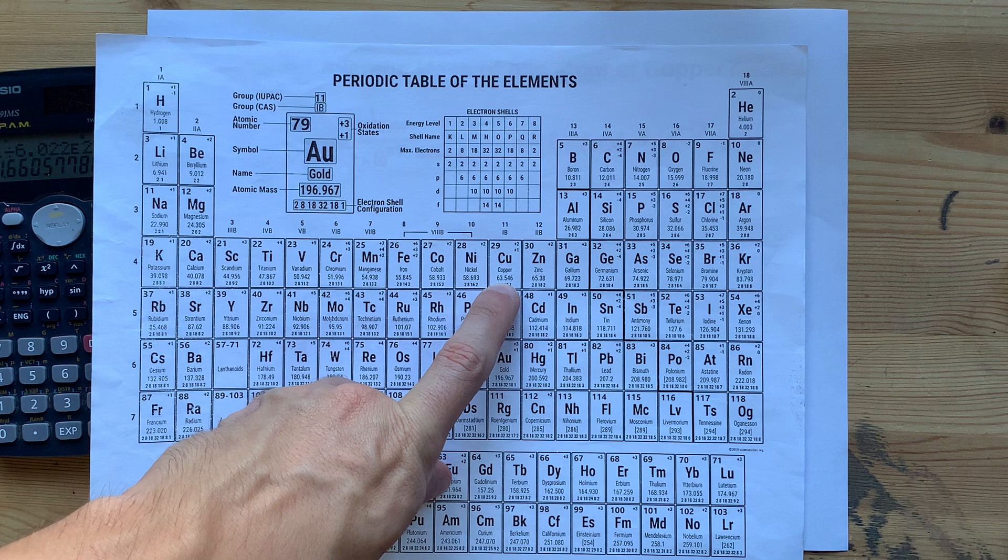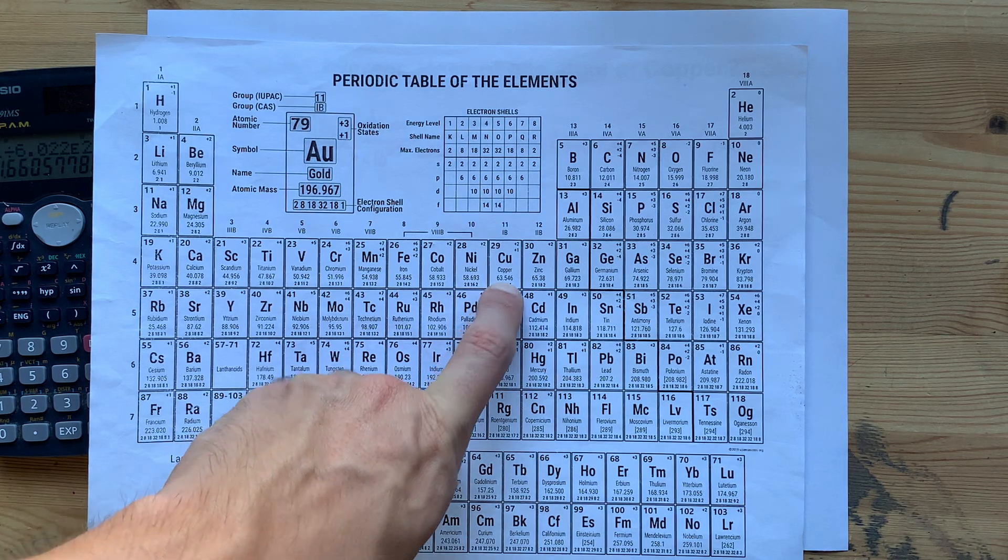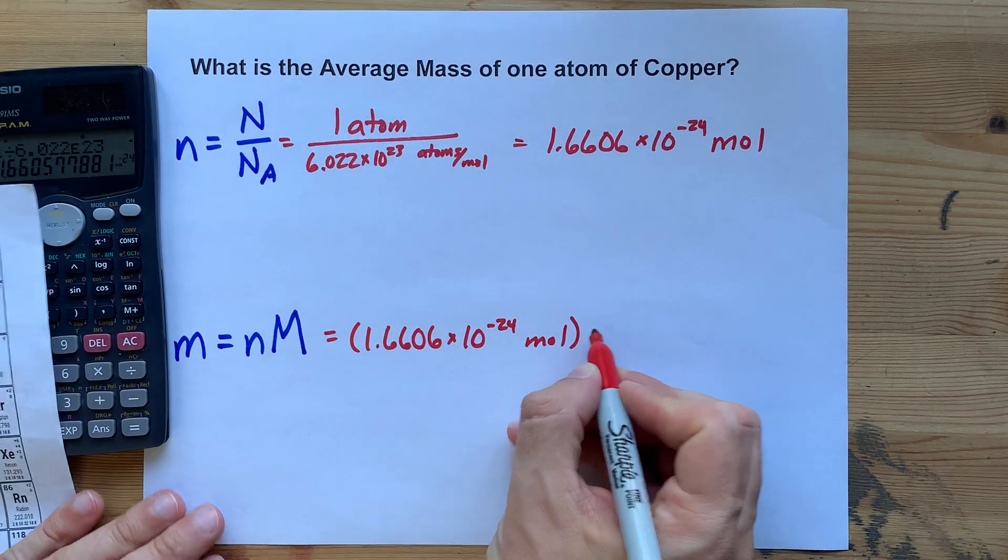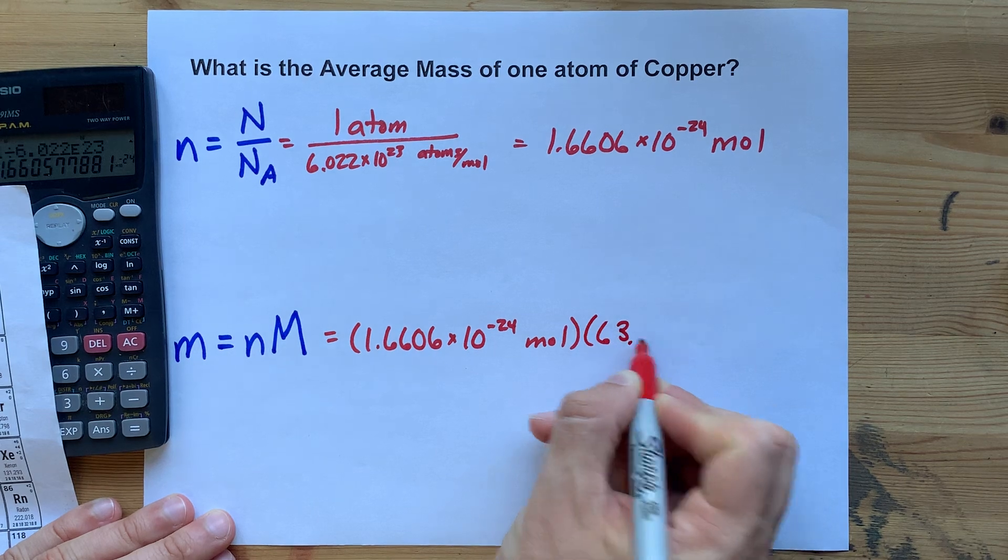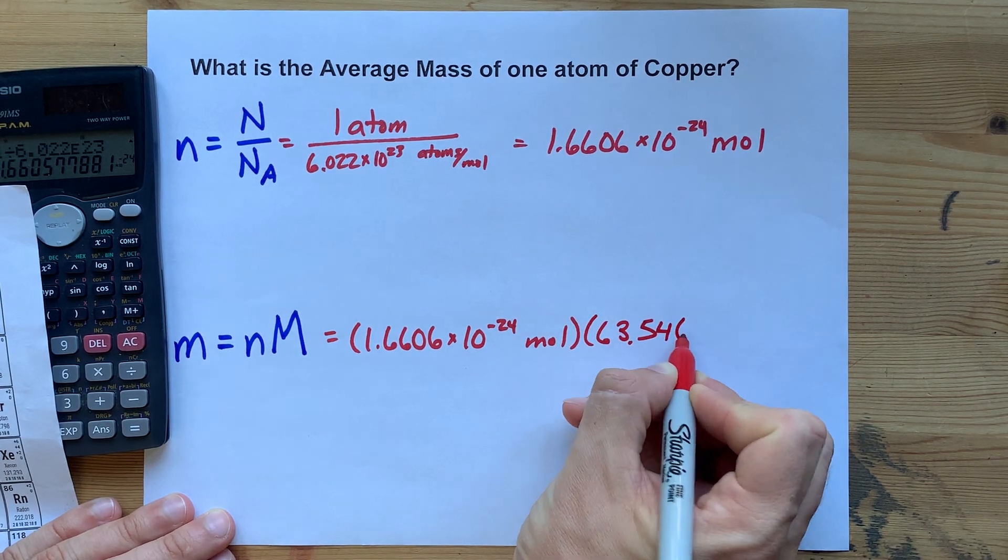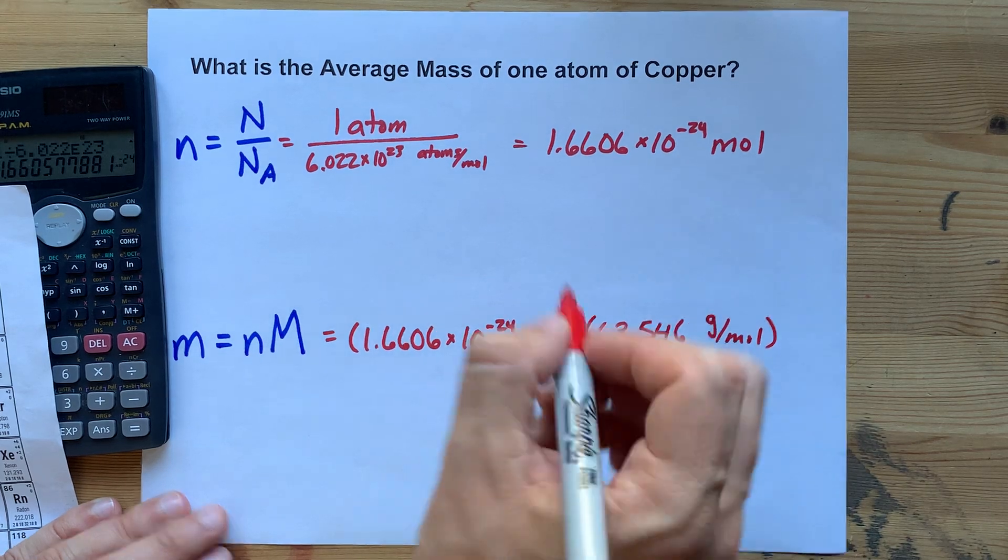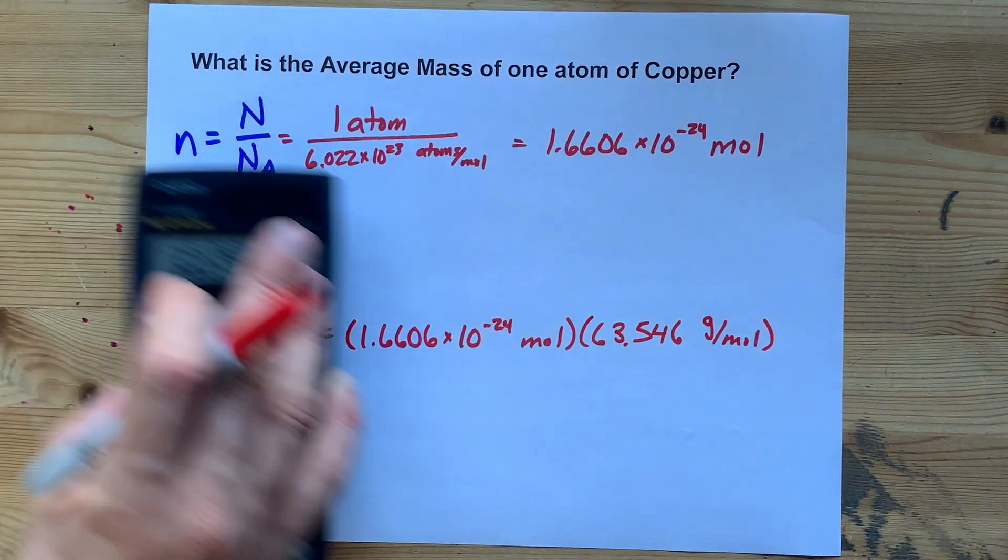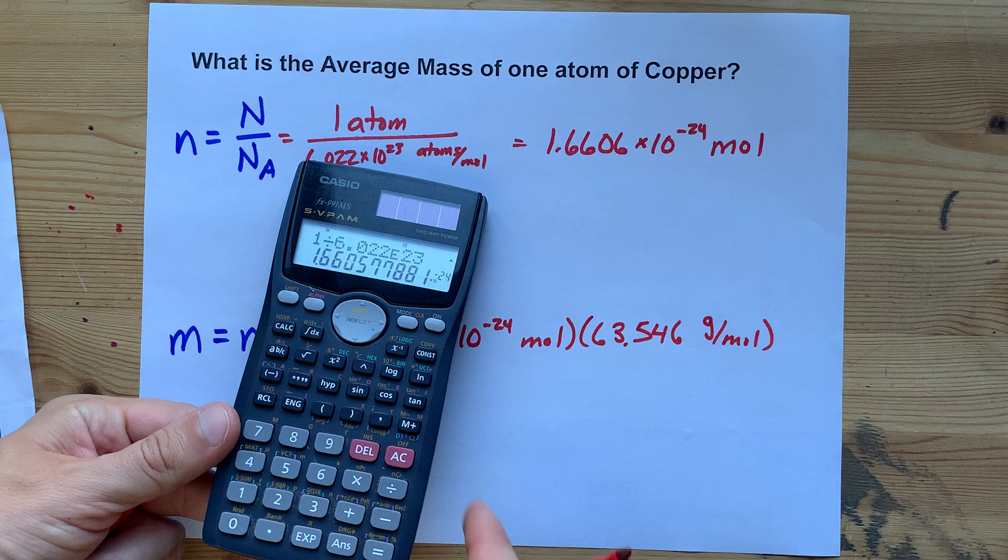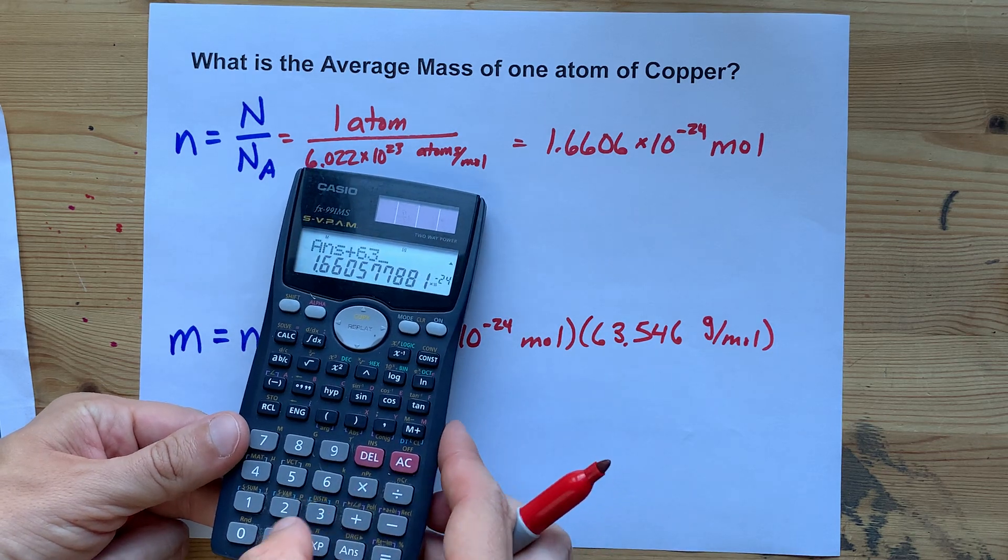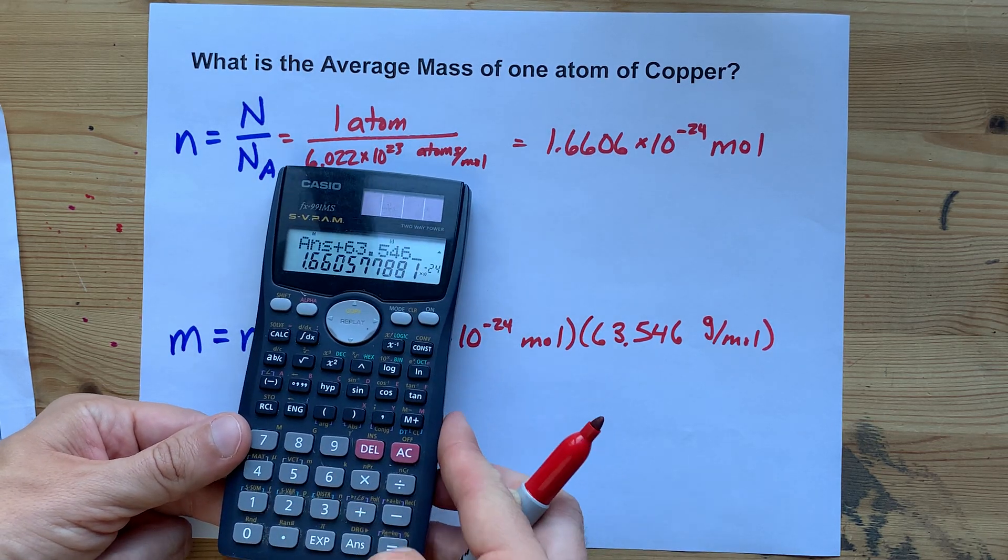And copper weighs 63.546 grams for every mole. So we can multiply that by number of moles to get the total number of grams. Let's do that. Times 63.546. Bam.